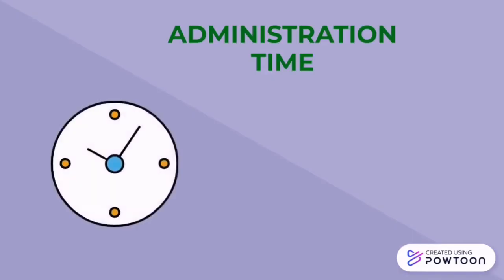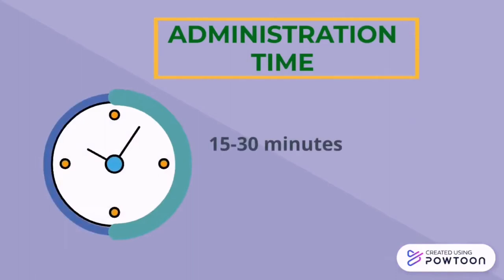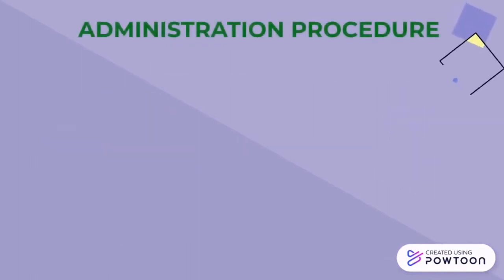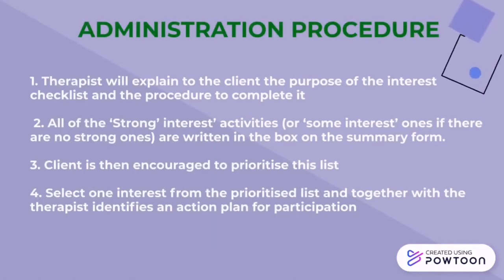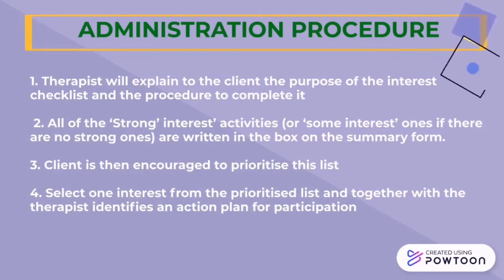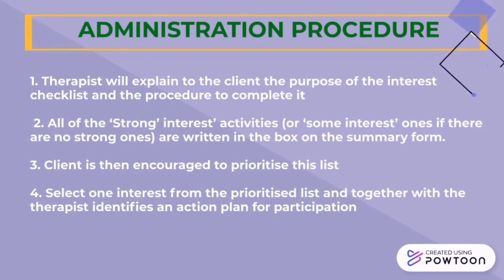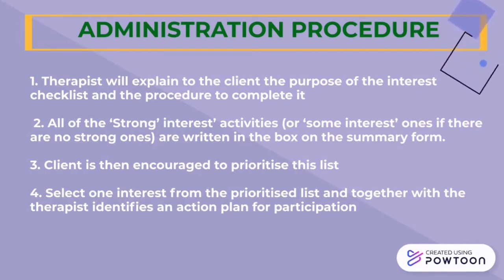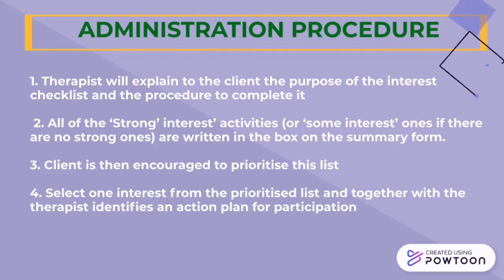This assessment can be administered in 15 to 30 minutes. After the client begins completing the checklist, all of the strong interest activities or sub-interest ones with unknown strong ones are listed in the box in a summary form. The client is then encouraged to prioritize this list, select one interest from the prioritized list, and together with the therapist identify an actual plan for participation.